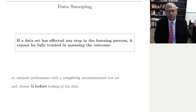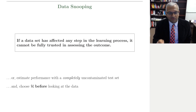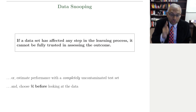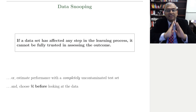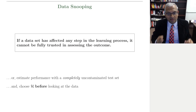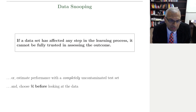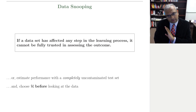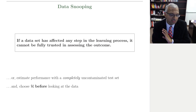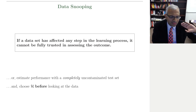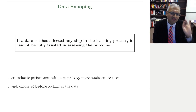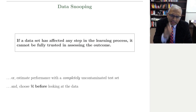If you really want a trustworthy, unbiased assessment of performance, you have to estimate the performance on a completely uncontaminated test set. That's the operational principle that comes from the data snooping principle. Whenever you are thinking that you're going to assess your performance on a test set, you have to lock that test set in a vault, and that test set must not affect any choice in the learning process.